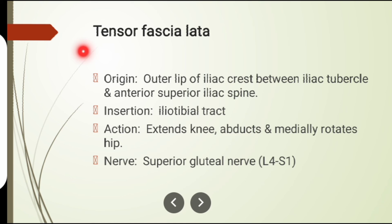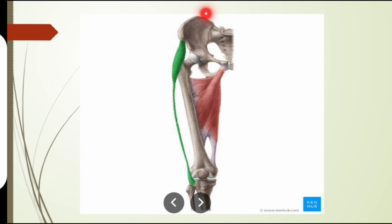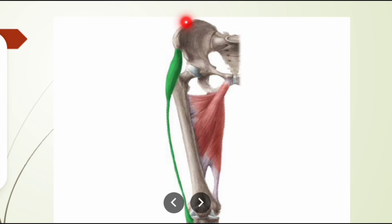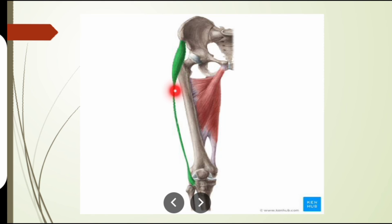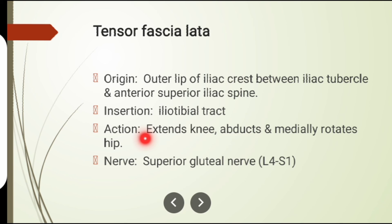The last muscle involved in knee extension is tensor fasciae latae. Its origin is from the outer lip of the iliac crest between the iliac tubercle and the anterior superior iliac spine. Its insertion is on the iliotibial tract. Actions: knee extension, abduction, and medial rotation of the hip. Nerve supply: superior gluteal nerve.